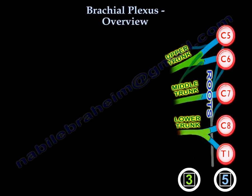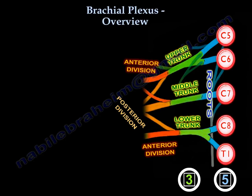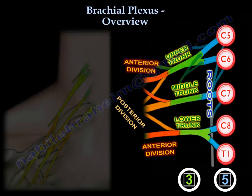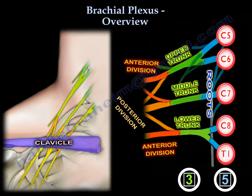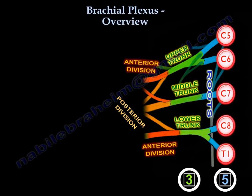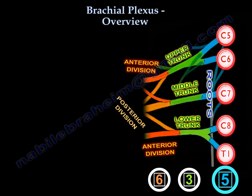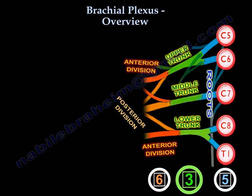Each of the three trunks divides into an anterior and a posterior division. These divisions pass behind the clavicle. So three trunks give you six divisions — five roots, three trunks, six divisions.